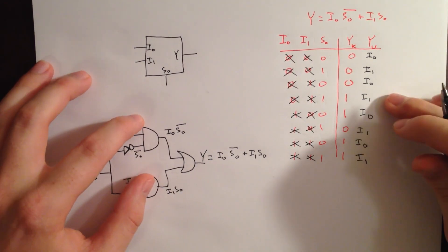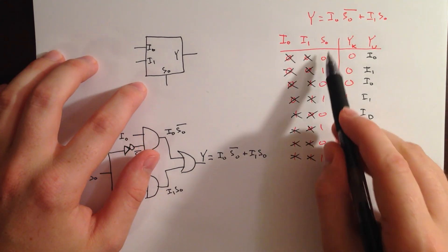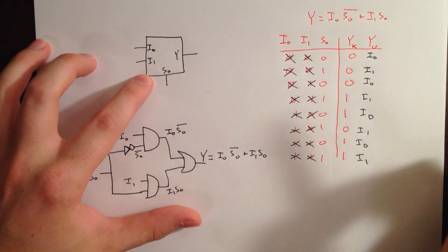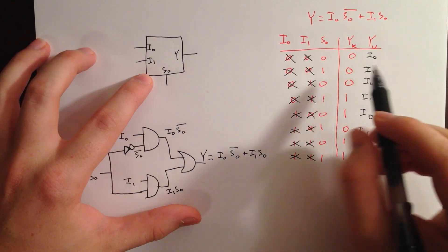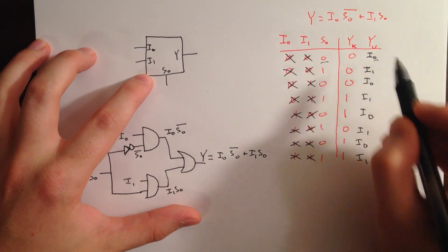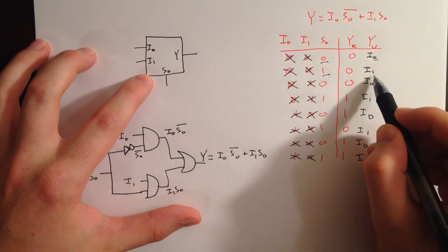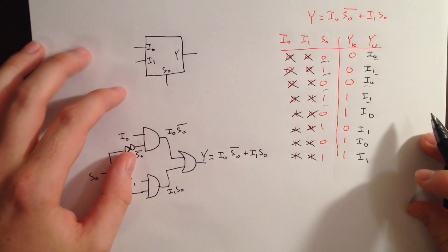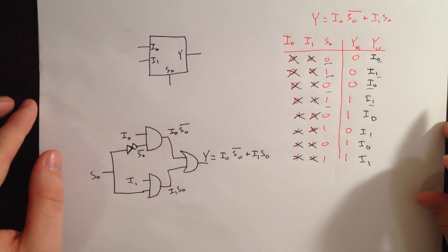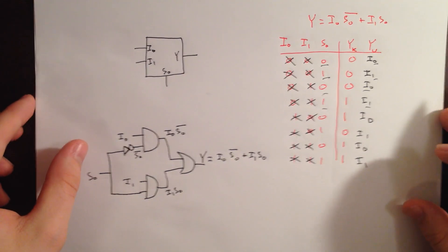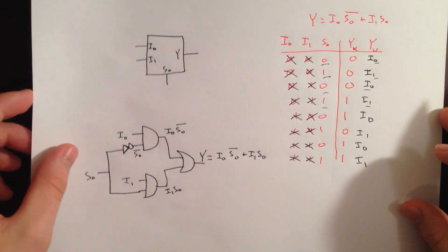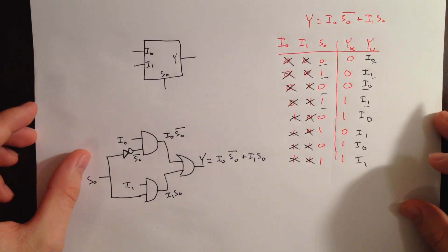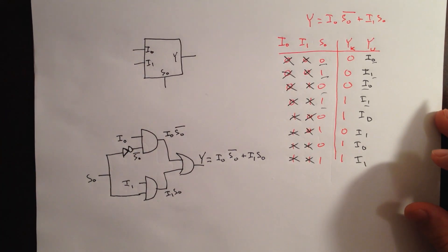So this essentially proves that whatever S0 is, that's going to determine your output from your inputs — S0 selects between I0 and I1. So I hope this helps you understand multiplexers a little bit more. I'm going to make one more video tonight about demultiplexers. Thank you for watching, and good night.